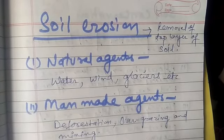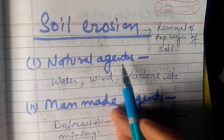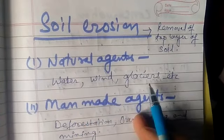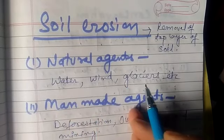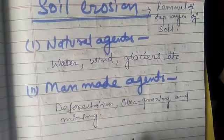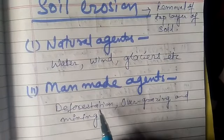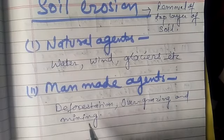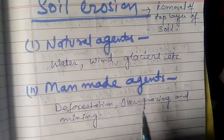The natural agents that cause soil erosion include water, wind, and glacier. Water erodes the soil, wind erodes the soil, and glacier also erodes the soil. The manmade agents include deforestation, overgrazing of animals, and mining. These are the manmade causes of soil erosion.